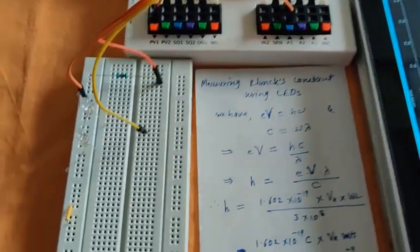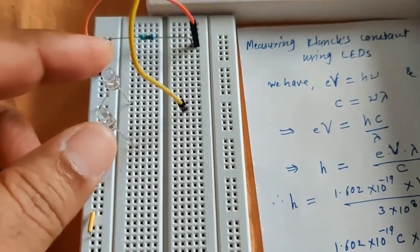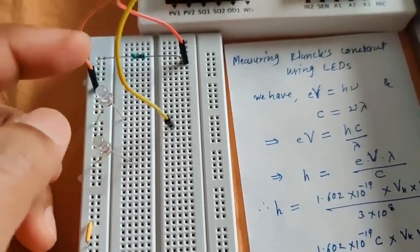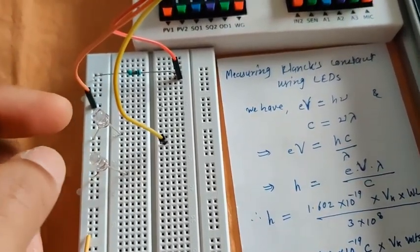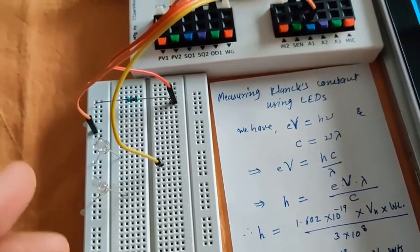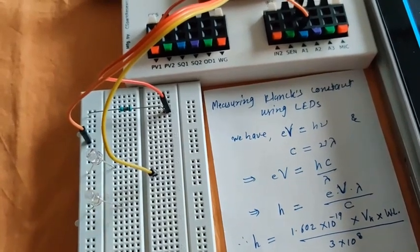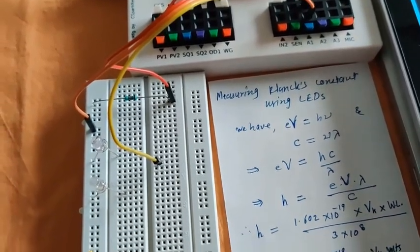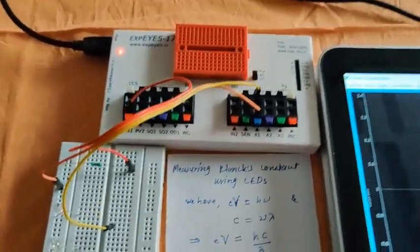I have taken two LEDs of extreme wavelengths: one from red region and other from blue region. Red has its wavelength around 690 nanometers and blue has its wavelength around 480 nanometers. Now we will go to the experimental part.